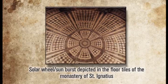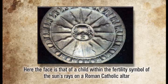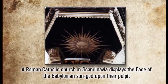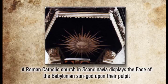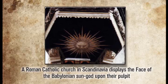We see this even today. Here is the face of a child — Tammuz — within the fertility symbol of the sun's rays on a Roman Catholic altar. The same exact symbol appears as the face of the Babylonian sun god on a pulpit in a Roman Catholic church in Scandinavia. All of this same symbol comes right out of paganism.